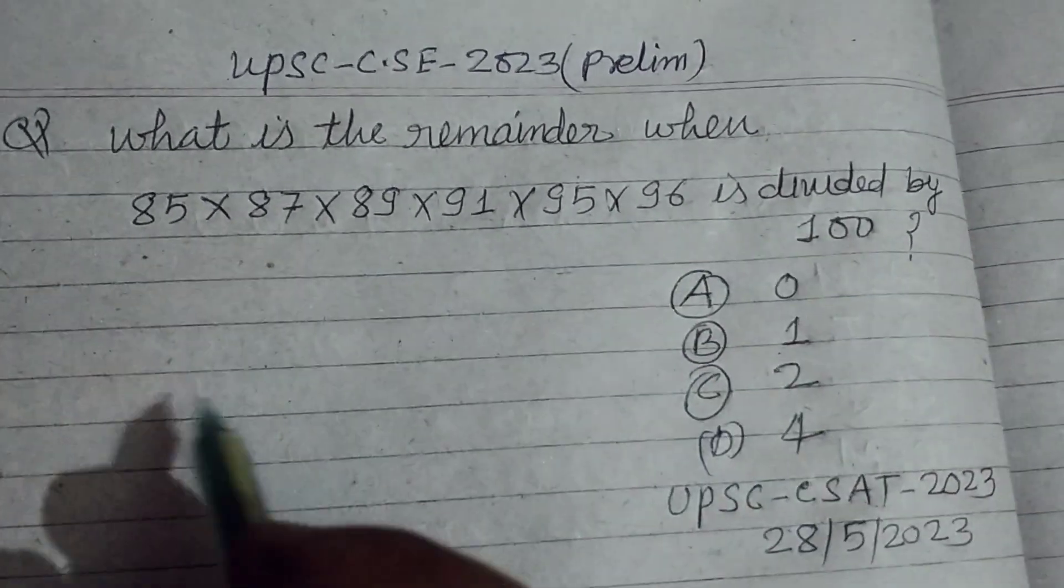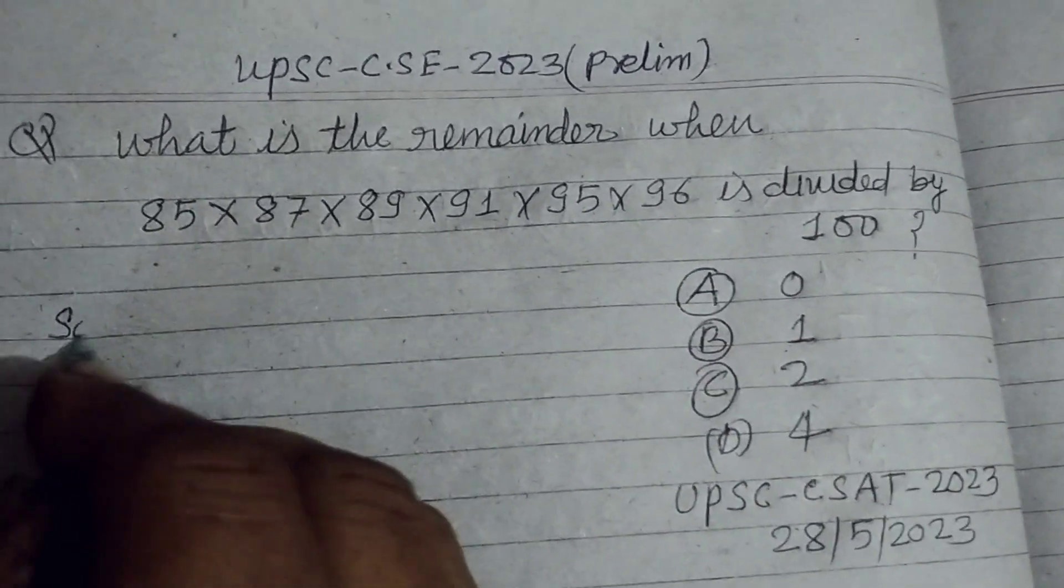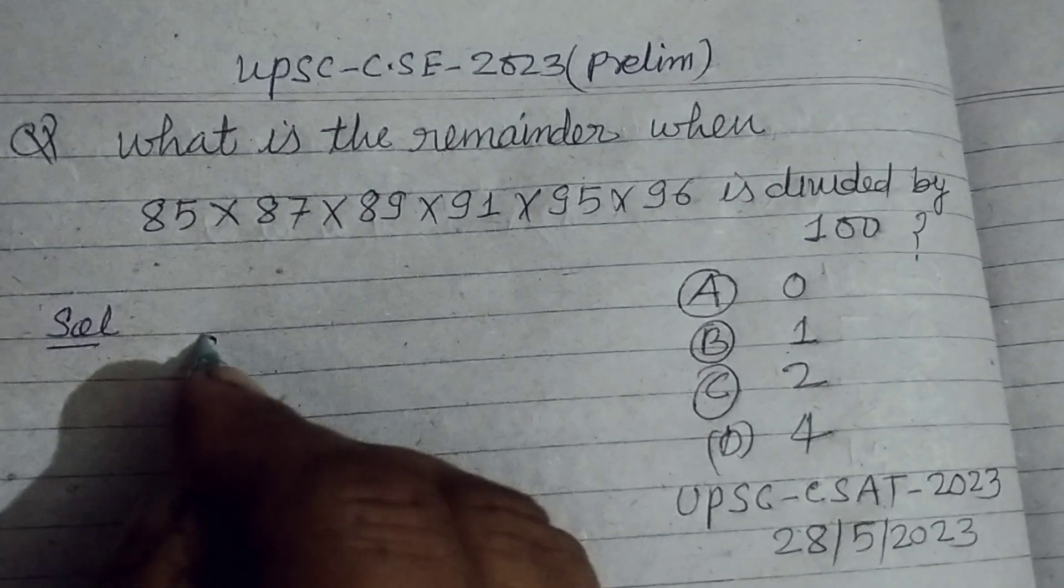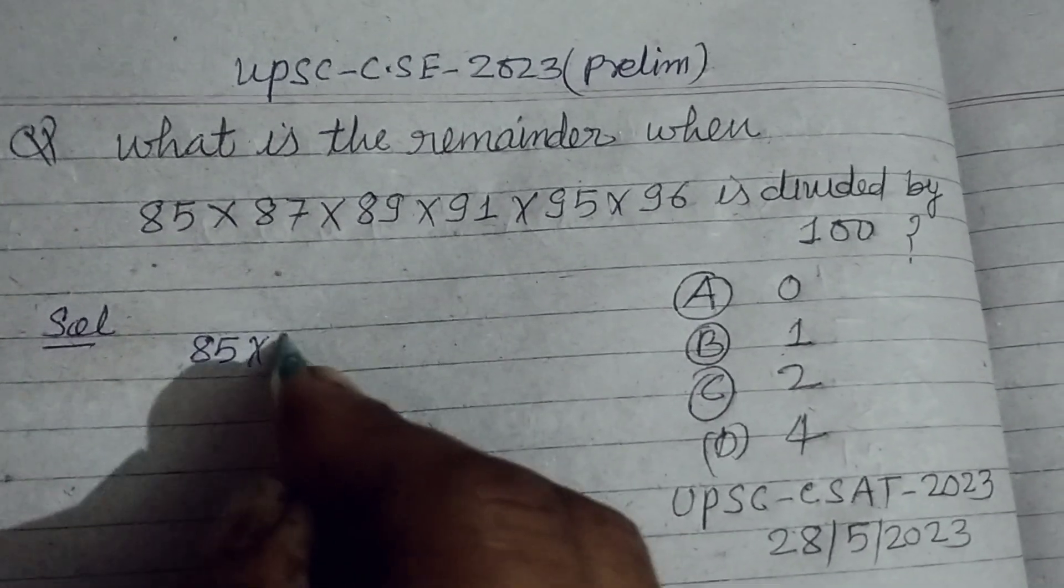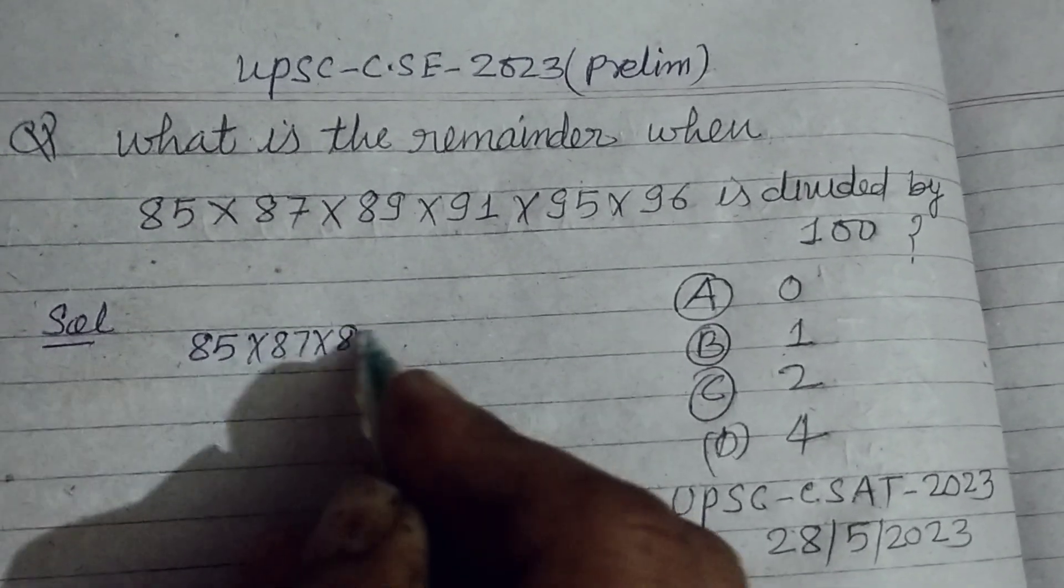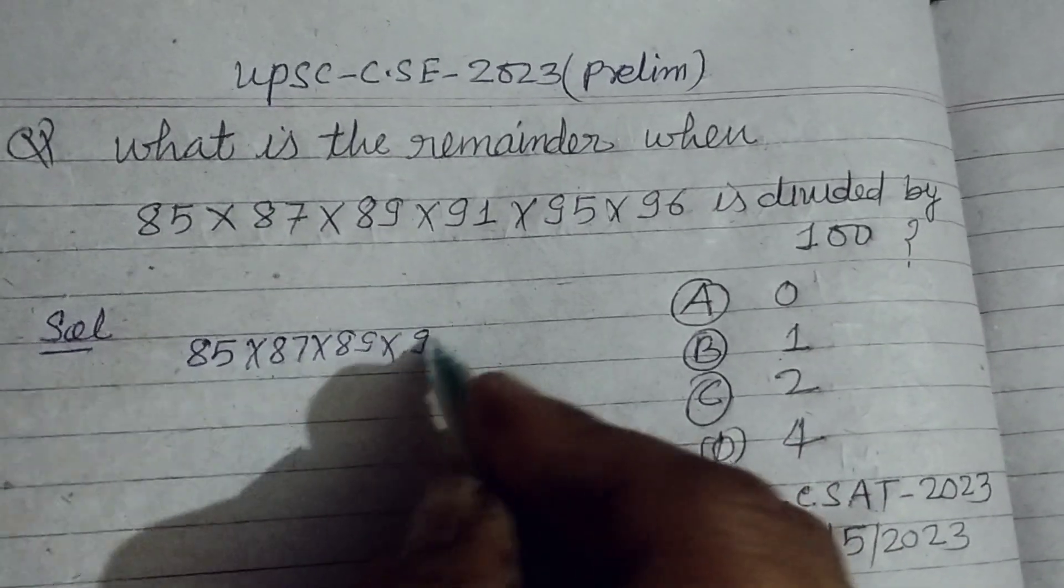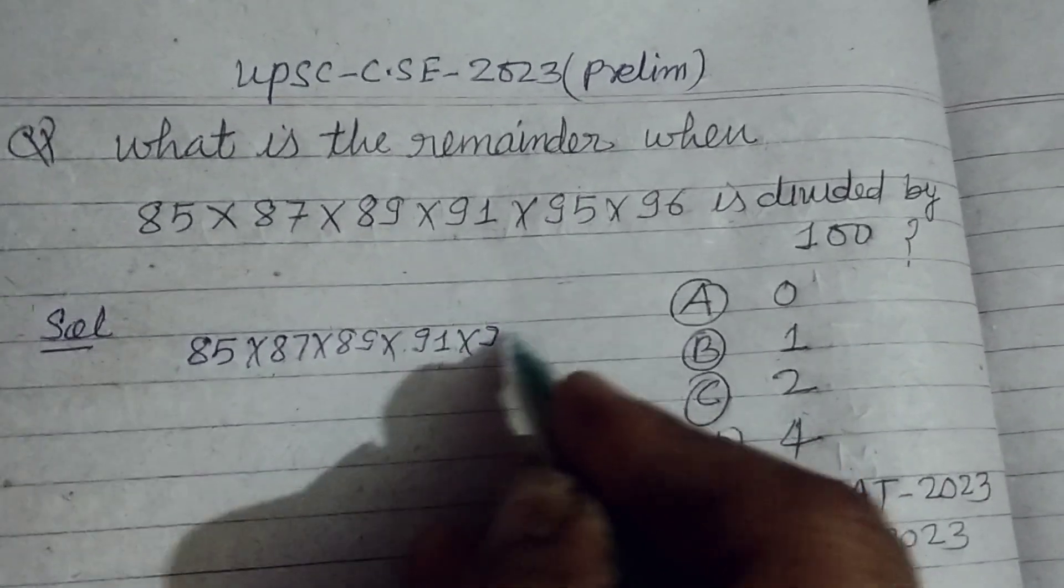So students, here the given numbers are 85×87×89×91×95×96 when divided by 100. We want to find out the remainder.